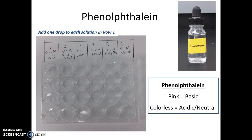The next test is using phenolphthalein, which is a clear colorless solution available in glass vials in the lab. Add one drop of phenolphthalein to each solution in row one and record the color response. Phenolphthalein will turn pink in a basic solution and stays colorless in an acidic or neutral solution.